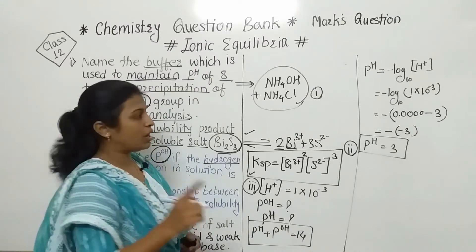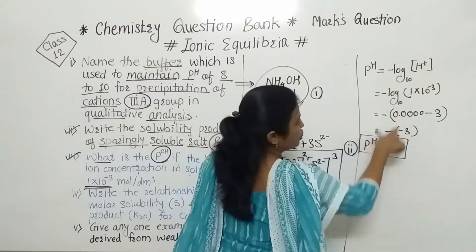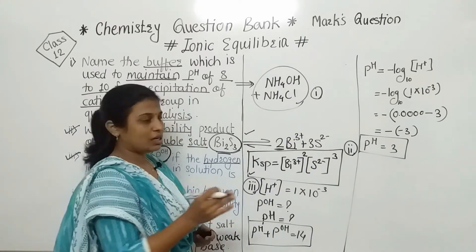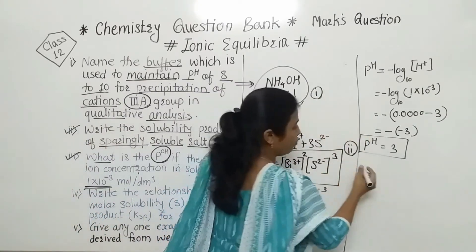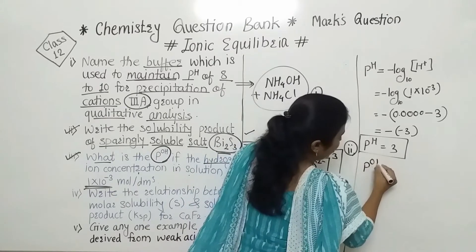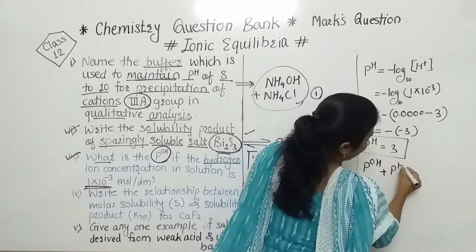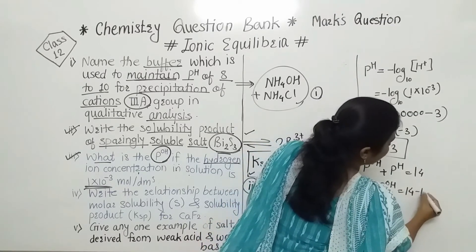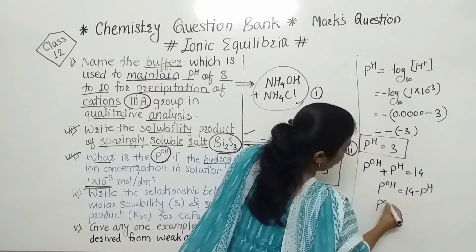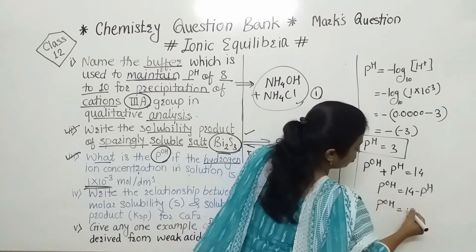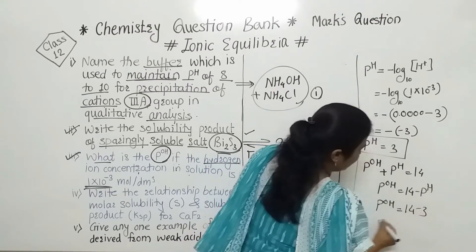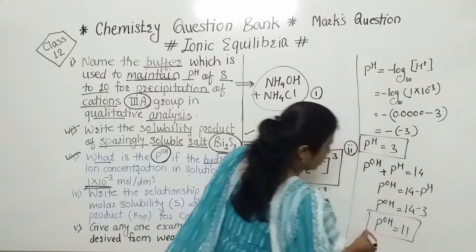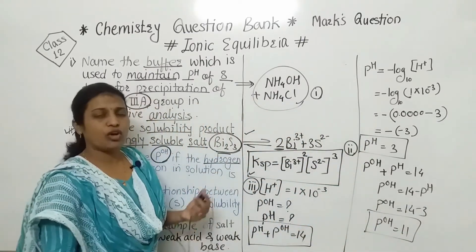For one mark you can directly use pH = 3. Using the formula: pH + POH = 14, so POH = 14 − pH. Therefore, POH = 14 − 3, which is 11. This is the final answer for this question.